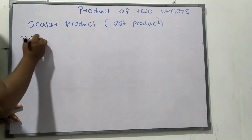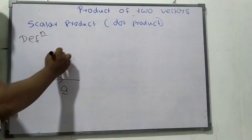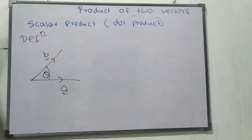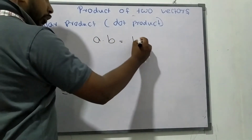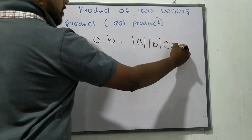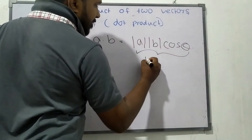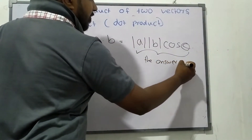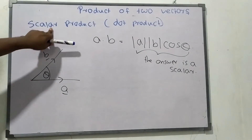The definition of the dot product: assume you have vector A and vector B. The dot product A dot B is defined as the magnitude of A times the magnitude of B times cosine of the angle between them. The answer is a scalar, which is why it is called the scalar product.